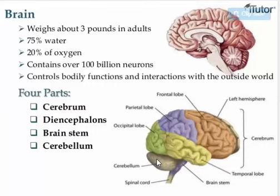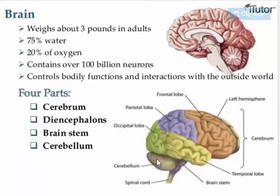Then we have the cerebellum, the second largest part of your brain, which lies beneath the back of the cerebrum. The cerebellum processes sensory information from your body, such as from skeletal muscles and joints, and allows your brain to keep track of your body's position. The cerebellum is very important for keeping your balance — whenever you're losing balance, the cerebellum keeps the muscles of your body in movement to make sure you return to balance.